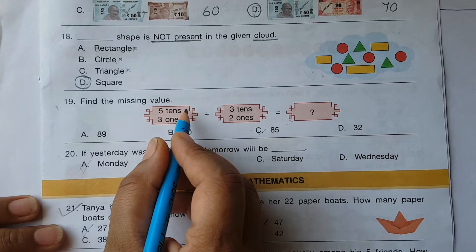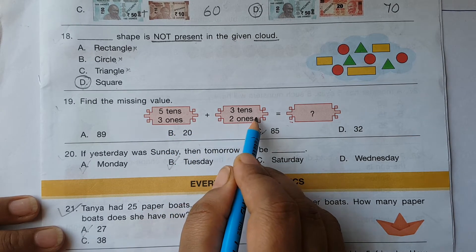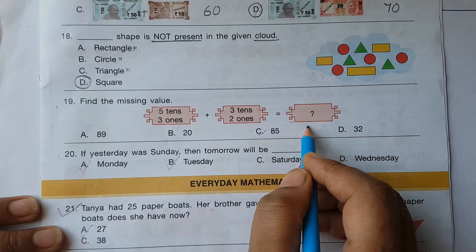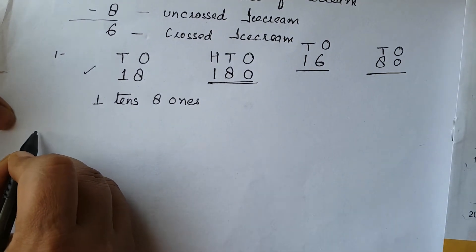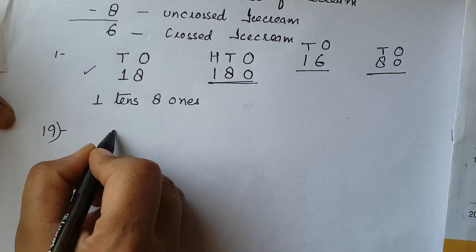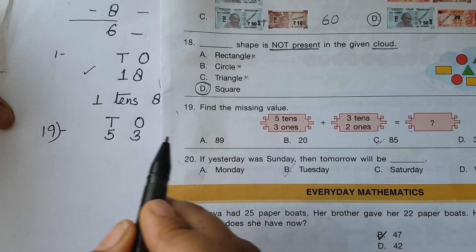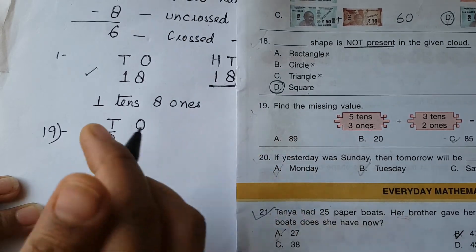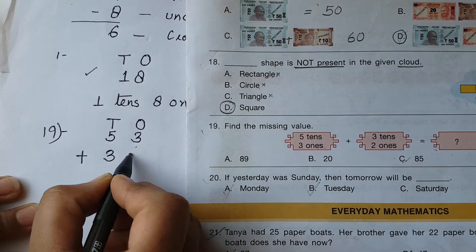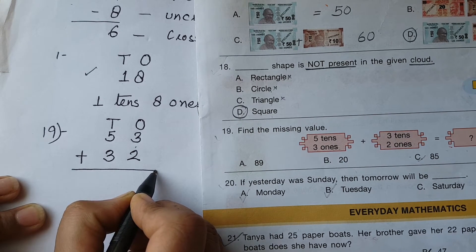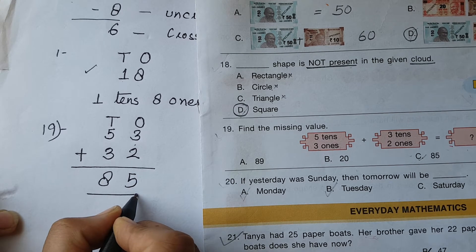Question 19: Find the missing value. Two boxes are being added. The first number has 5 tens and 3 ones, which equals 53. The second number has 3 tens and 2 ones, which equals 32. Add them: 3 plus 2 equals 5 in the ones place, 5 plus 3 equals 8 in the tens place. The answer is 85, so option C is correct.